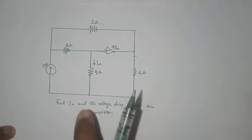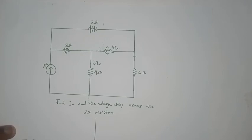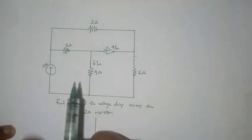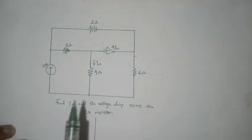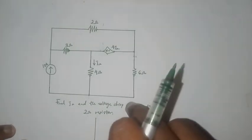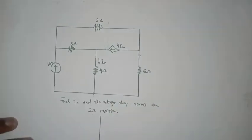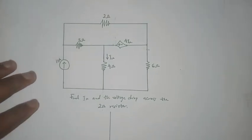You might have noticed something peculiar about the circuit, which is the fact that it has no voltage sources and each loop seems to contain a current source, which brings the question: are we going to be solving this circuit without using KVL equations? Well, I guess we're about to find out.